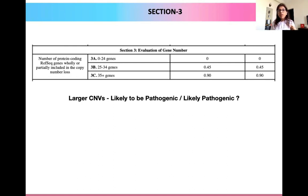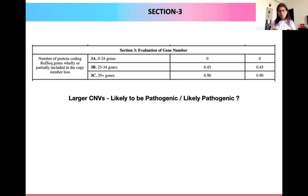By giving each criteria scores, for example if our deletion consists of a gene number between 0 to 24 we give it a particular score, 25 to 34 gives another score, and more than 35 genes will help classify our CNV close to the likely pathogenic scoring. This particular section is a very important part of our ACMG CNV scoring guidelines.